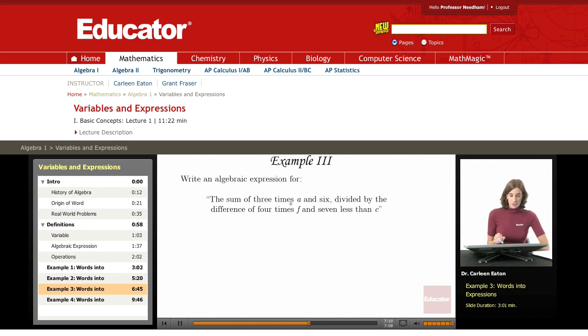This first clause before the comma is the sum of three times a and six. This entire first section is being divided by the whole second section.